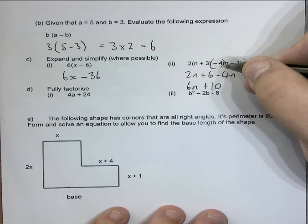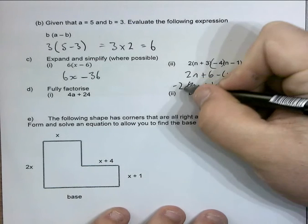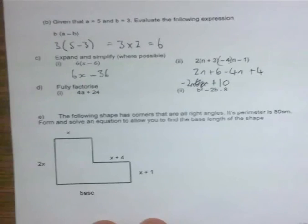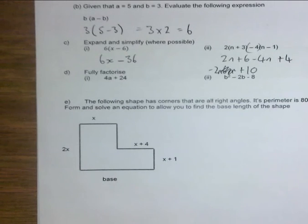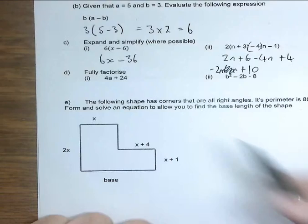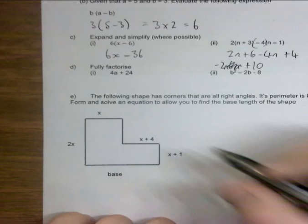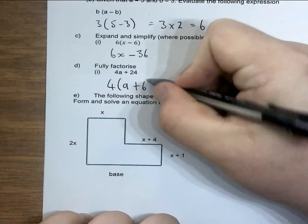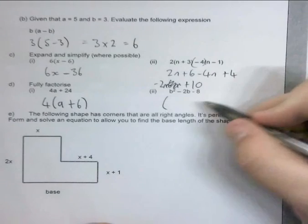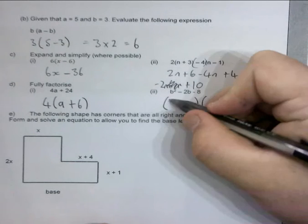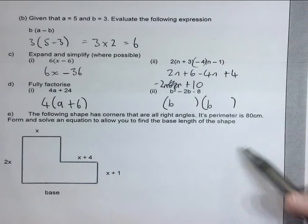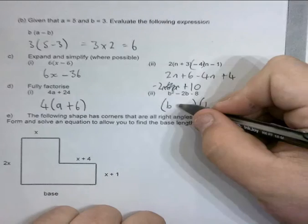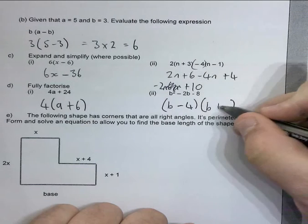The answer is negative 2n — I didn't add very well, but I'm not the one sitting the test. What's the common factor of 4a and 24? Just 4, so it's 4 times a and 4 times 6. This next one has to be expanded into two brackets because it's a quadratic — it's b in both brackets, and you need two numbers that multiply to give negative 8.